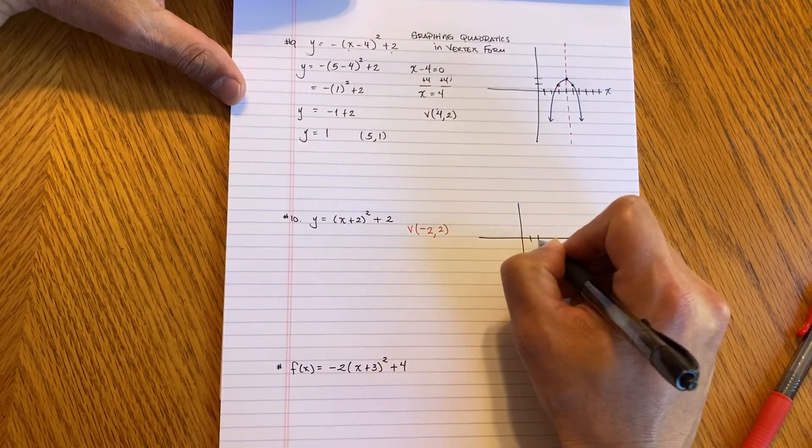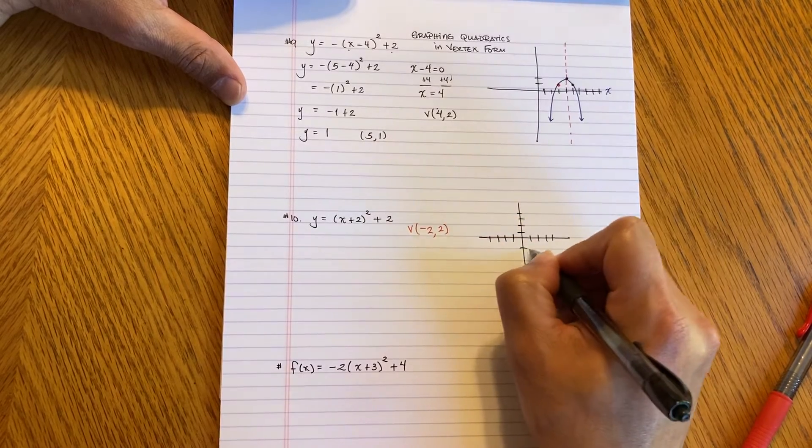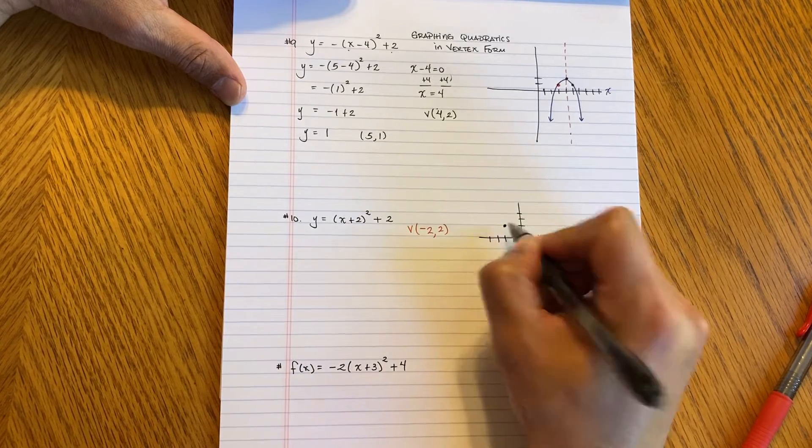So we're going to go 1, 2, 3, 4, 1, 2, 3, 4, up a few, down a few. So negative 2, positive 2 is going to be right here.